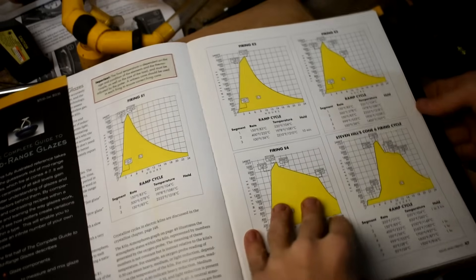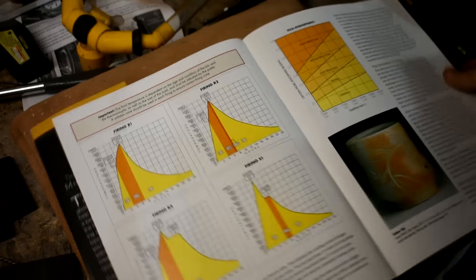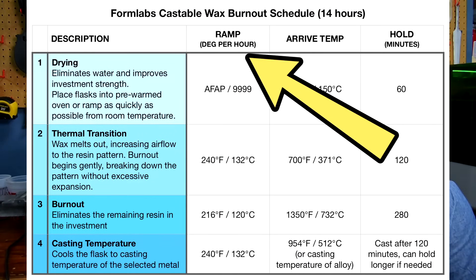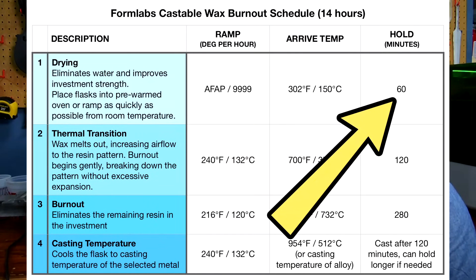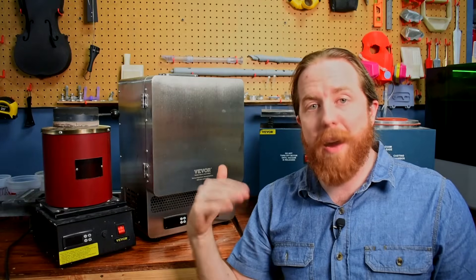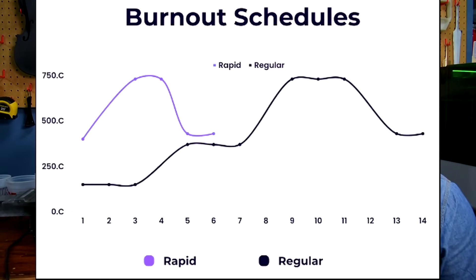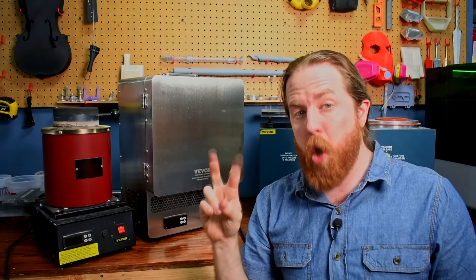So what's a firing schedule? Well, that's where you can program other kilns, including the one that I built, with set ramp speeds. How fast do you want it to heat up? To what temperature? How long do you want to hold it? How fast do you want it to change to a different temperature? How long do you want it to hold it? And so on. You can kind of program that in. And that's a schedule.